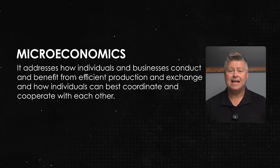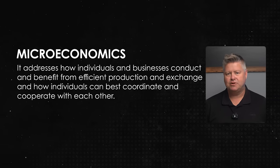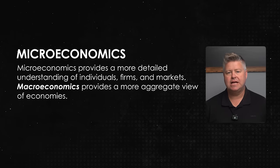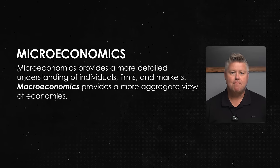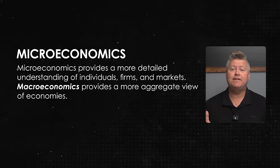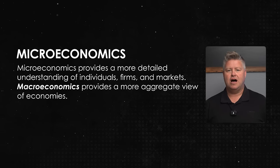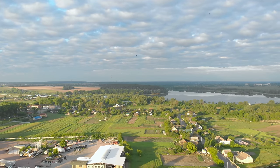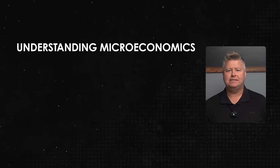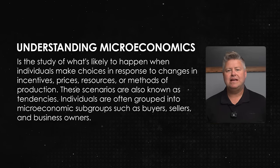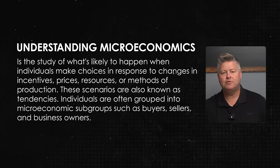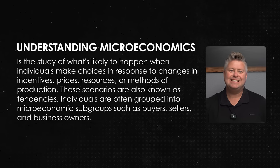Microeconomics addresses how individuals and businesses conduct and benefit from efficient production and exchange and how individuals can best coordinate and cooperate with each other. Microeconomics provides a more detailed understanding of individuals, firms, and markets. It's the study of what's likely to happen when individuals make choices in response to changes in incentives, prices, resources, or methods of production. These scenarios are also known as tendencies.